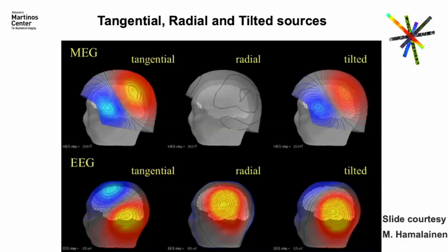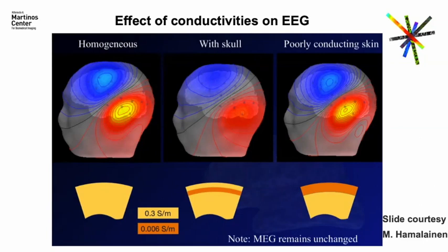EEG is sensitive to conductivity. The EEG signal has to go from the brain through CSF to bone, to skin, and then finally to the electrode. When it traverses through the bone, especially being a poor conductor of electricity, the electric field is smeared. The magnetic field does not is not affected by these conductivity boundaries. In EEG, you will see an effect of whether there was a skull or skin that was poorly conducting, but MEG is unchanged.